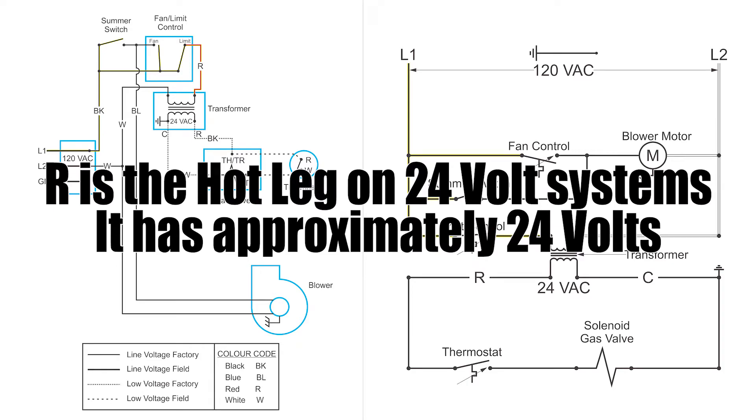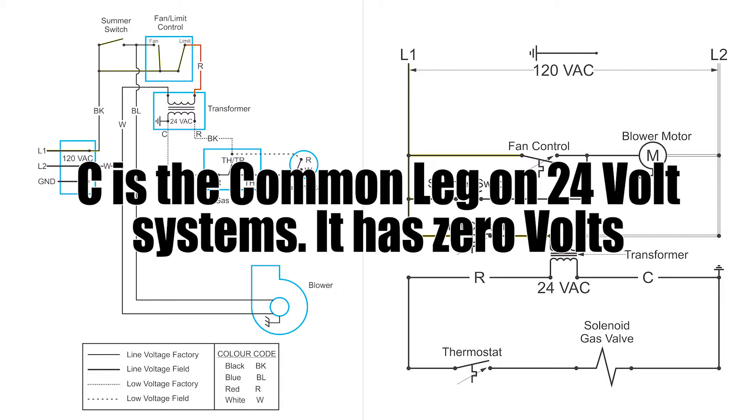Now R is the hot leg. And that's where you will measure 24 volts. C is the common leg. And if you measure your voltage there you'll get zero.